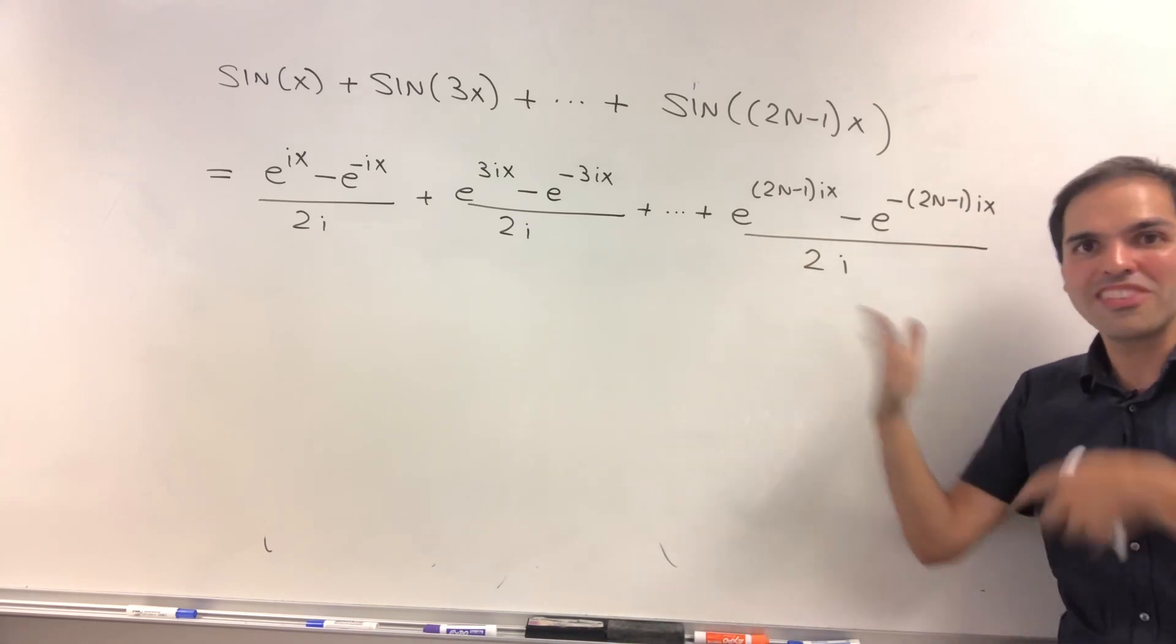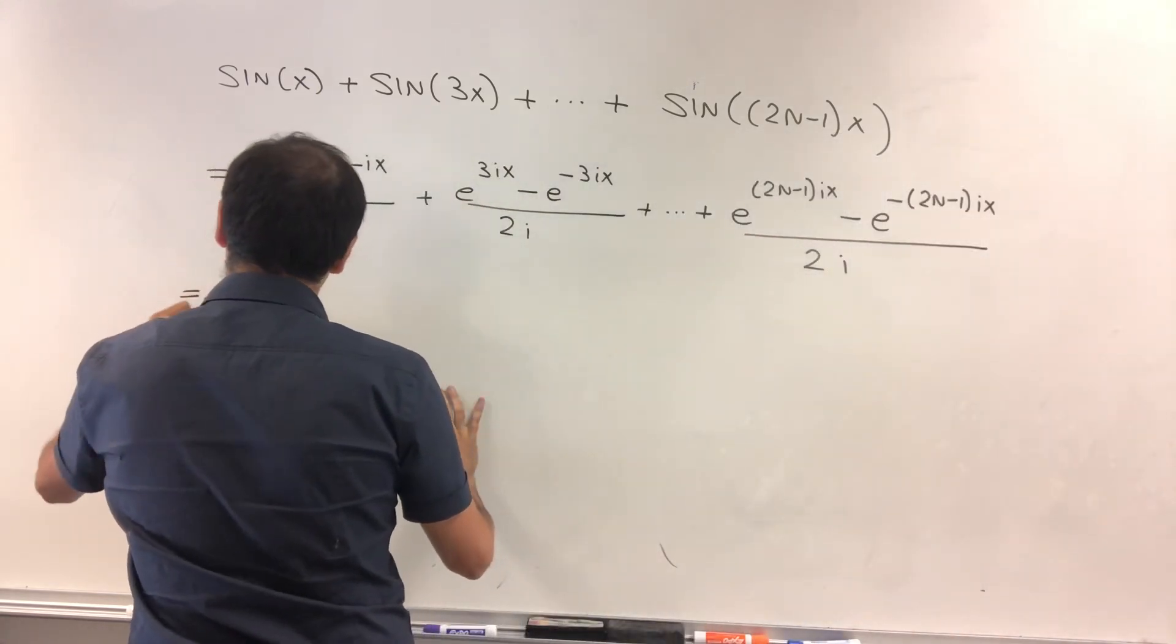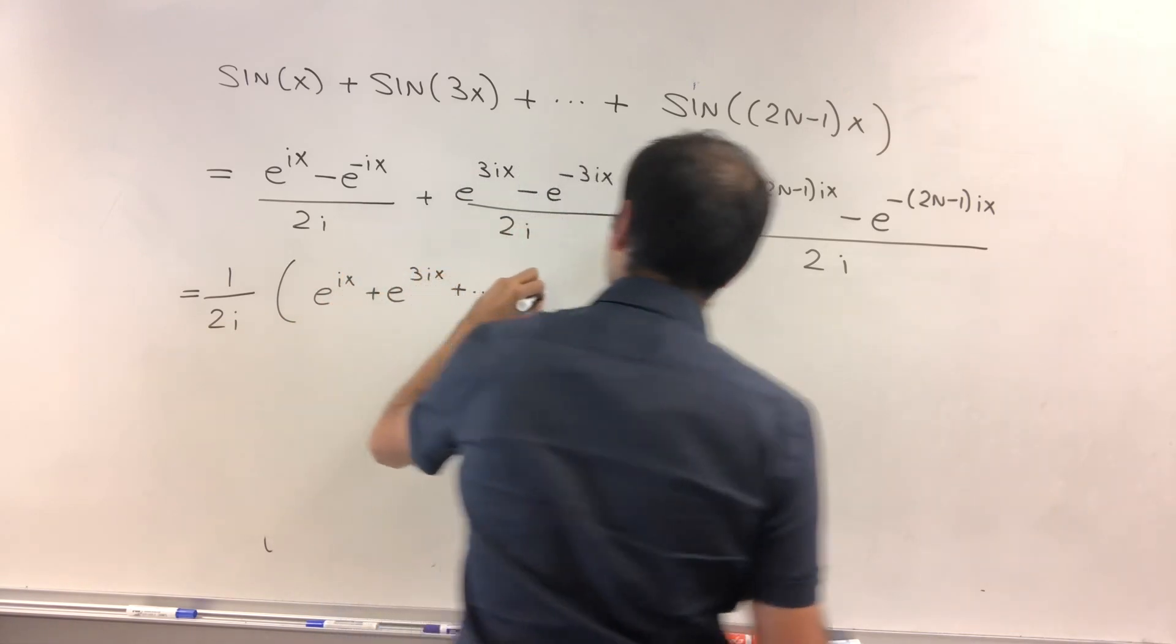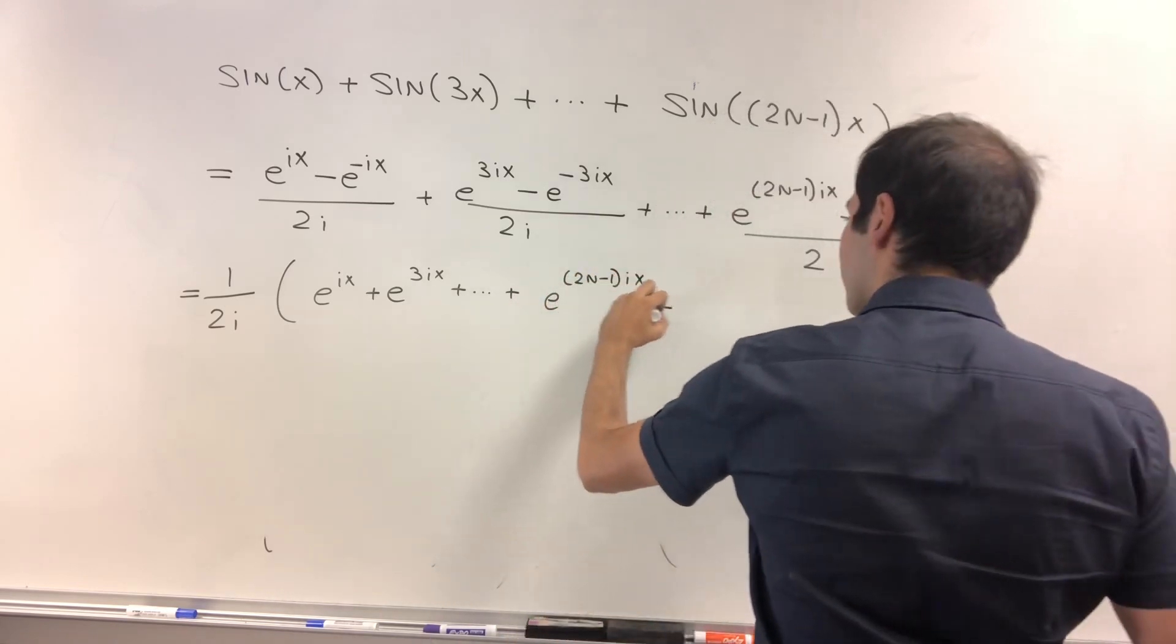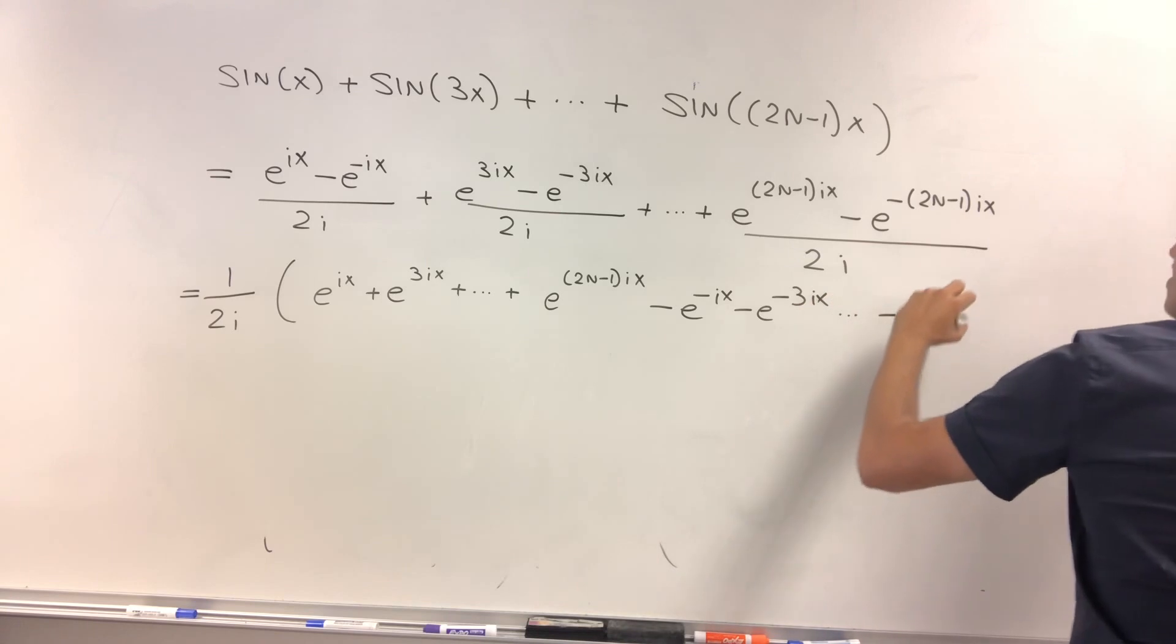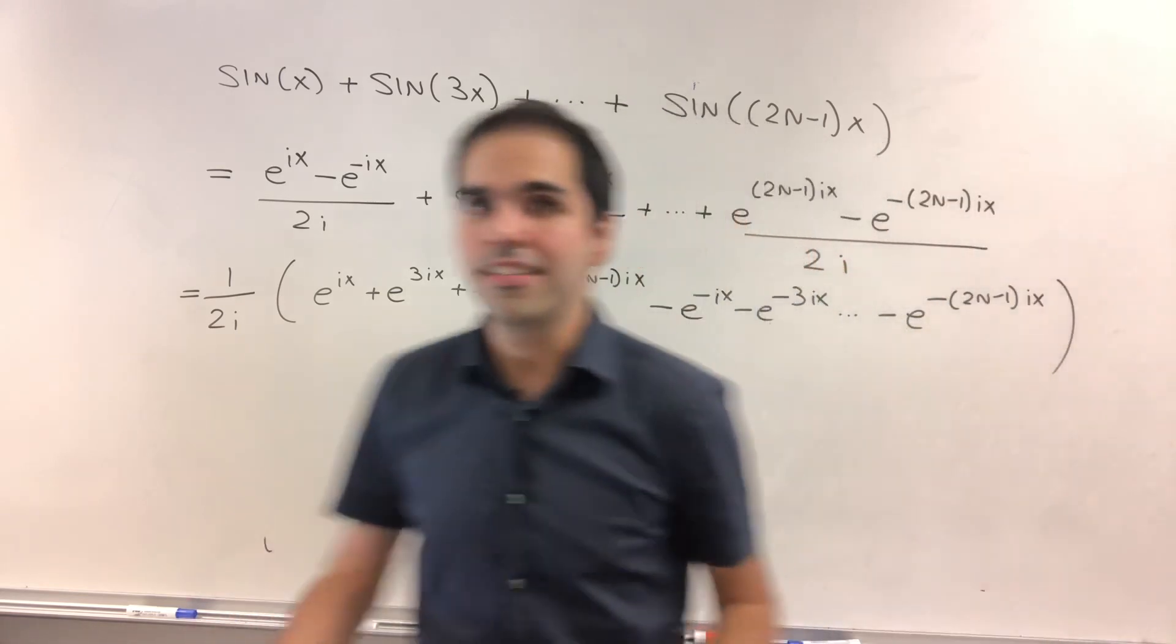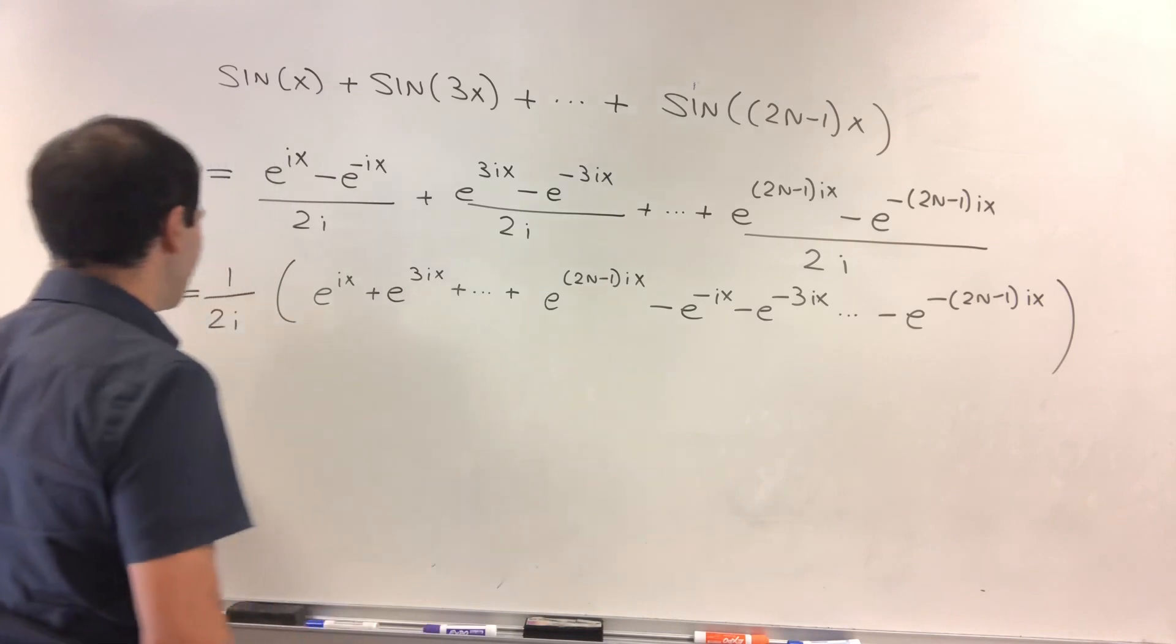And then you'll see soon there's something geometrically going on. So let's factor out the 1 over 2i and separate positive and negative exponents. So this is e to the ix plus e to the 3ix plus dot, dot, dot, plus e to the 2n minus 1ix, and minus e to the minus ix minus e to the minus 3ix, dot, dot, dot, and minus e to the minus 2n minus 1ix. And I believe this also arises in Fourier series with maybe the Césaro way of summing up series. Maybe. I don't quite remember the details.